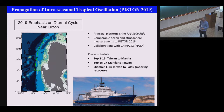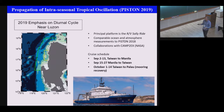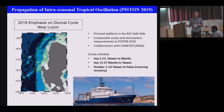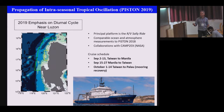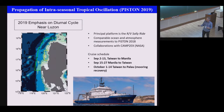In 2018 we ended up in the western Pacific, but this coming summer we plan to go to our originally intended location just west of Luzon. We'll take the RV Sally Ride with comparable ocean and atmospheric measurements from about September 2nd through September 22nd. One of the key ideas is to study interactions between the northward propagating ISO and the diurnal cycle of convection over and near the coastal waters of Luzon. We don't yet know whether the diurnal cycle is a help or hindrance to northward propagation, but hopefully this field program will give us some answers.